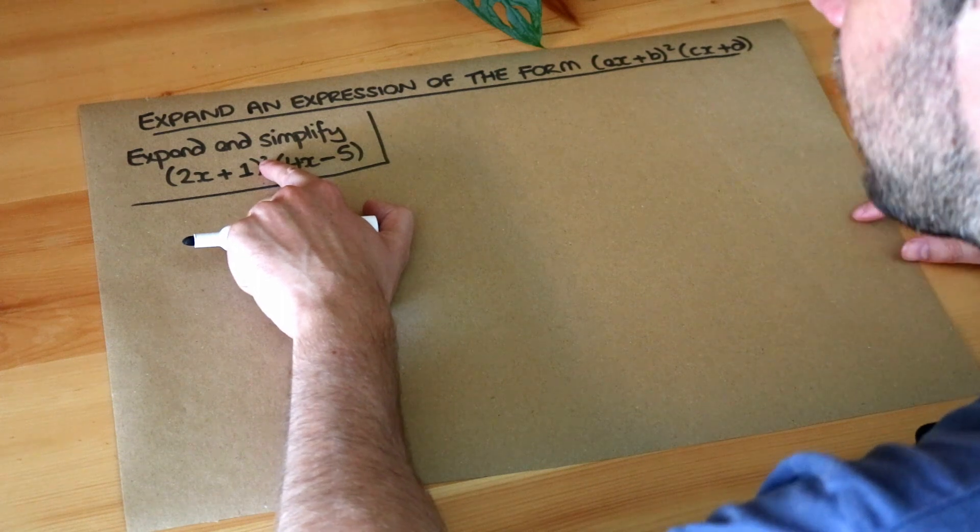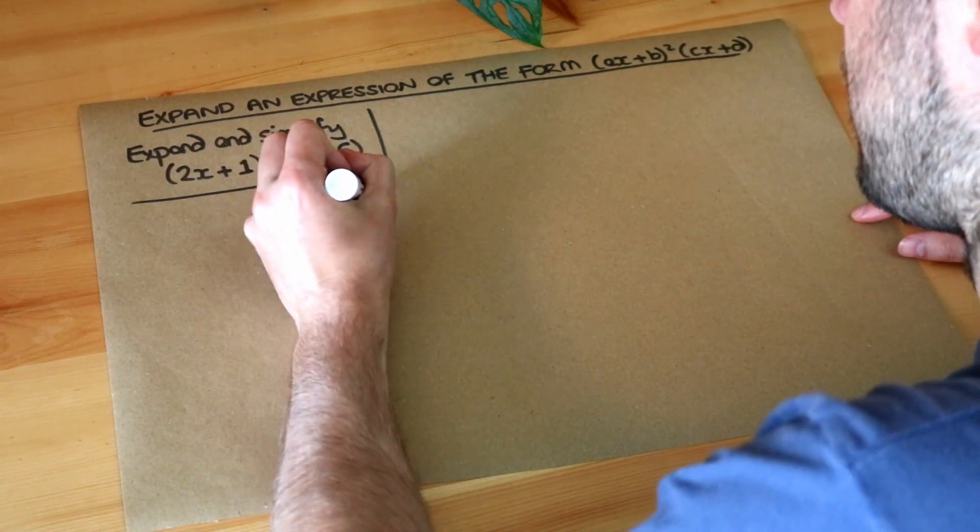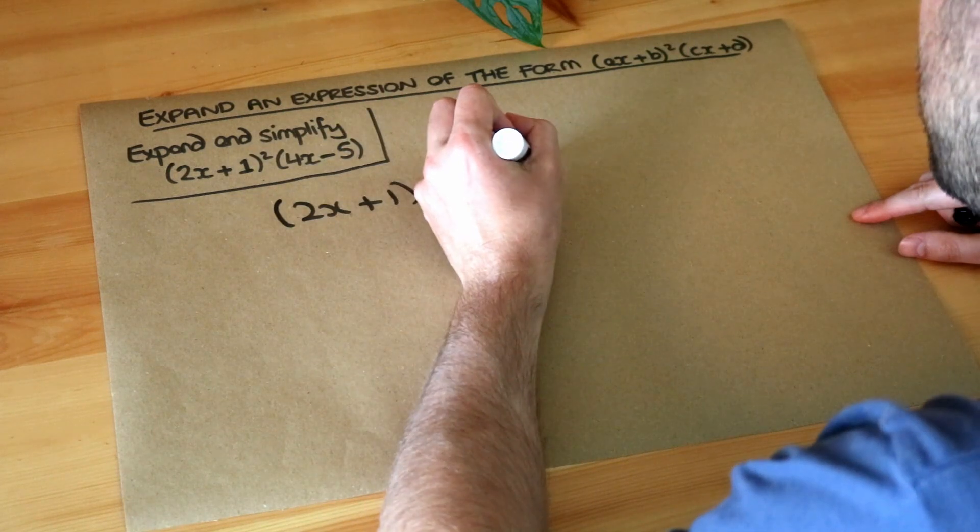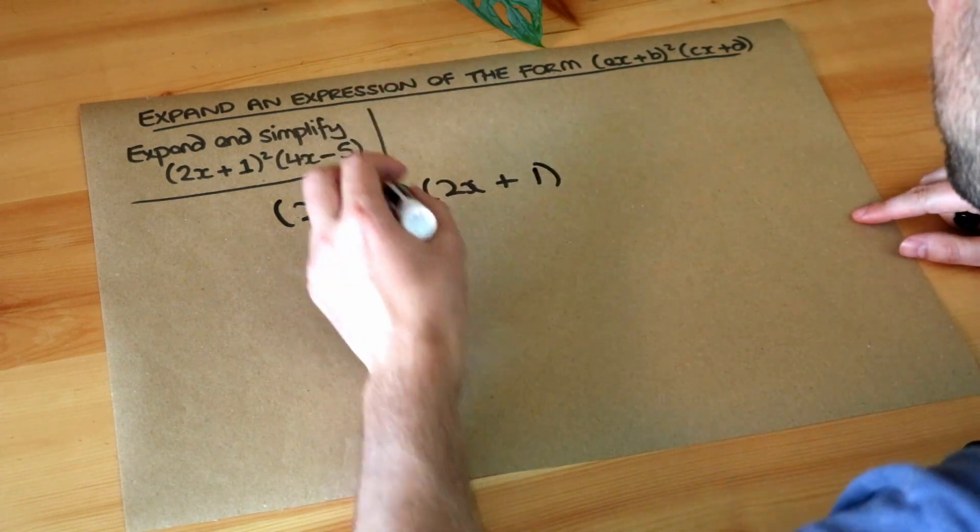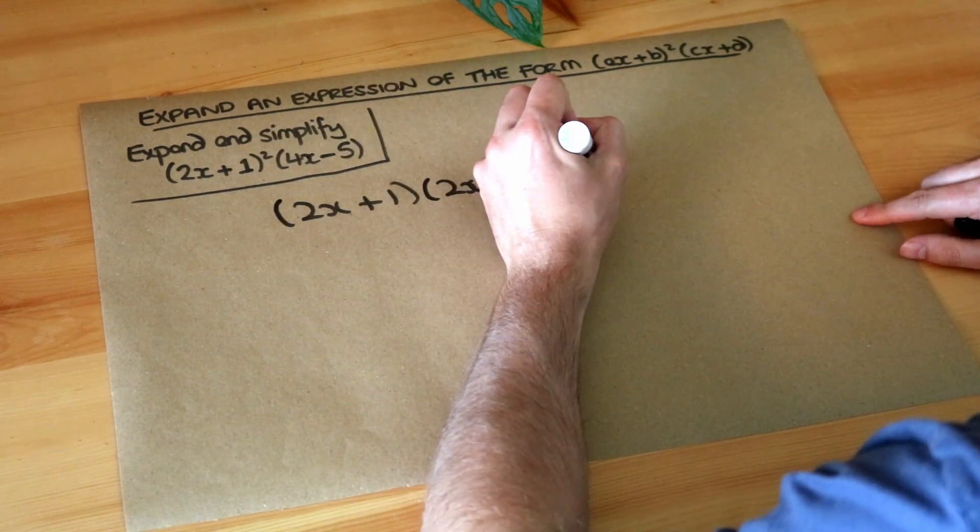Now whenever we're squaring a bracket we know that means you multiply it by itself. So it means 2x plus 1 times by 2x plus 1 and then we're also multiplying by the 4x minus 5.